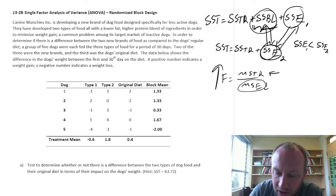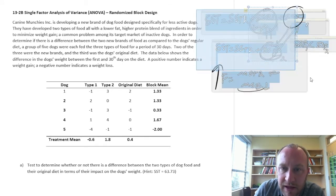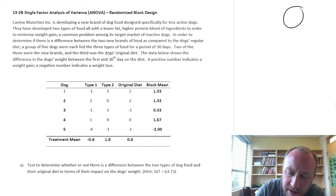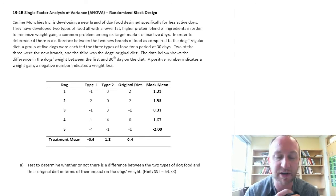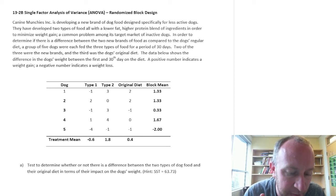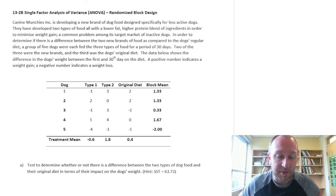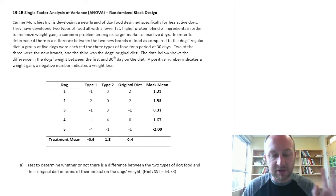So without further babbling on, let's get into these calculations and we'll develop our full randomized block ANOVA table. So here we have dog food manufacturers developing a new brand of dog food designed specifically for less active dogs. They have developed two types of food with lower fat, higher protein blend of ingredients in order to minimize weight gain, a common problem among these lazy dogs. In order to determine if there's a difference between the two brands of food and the dog's regular diet, a group of five dogs were each fed the three types of food for a period of 30 days. So they were given each of the two new brands and they were given their original diet. The data below shows the difference in weight between the first and the 30th day on the diet. Positive number is a weight gain, negative number is a weight loss.